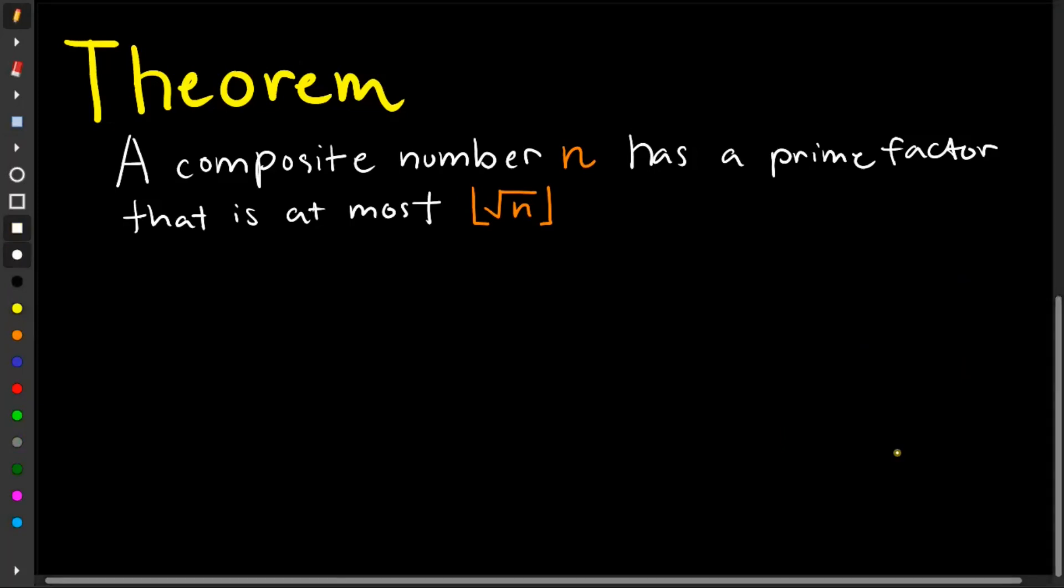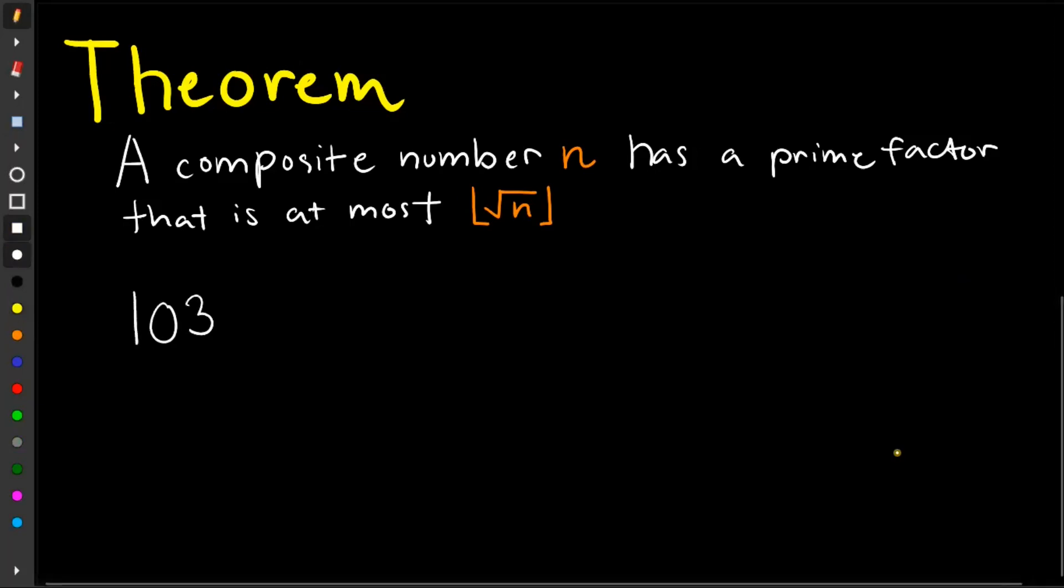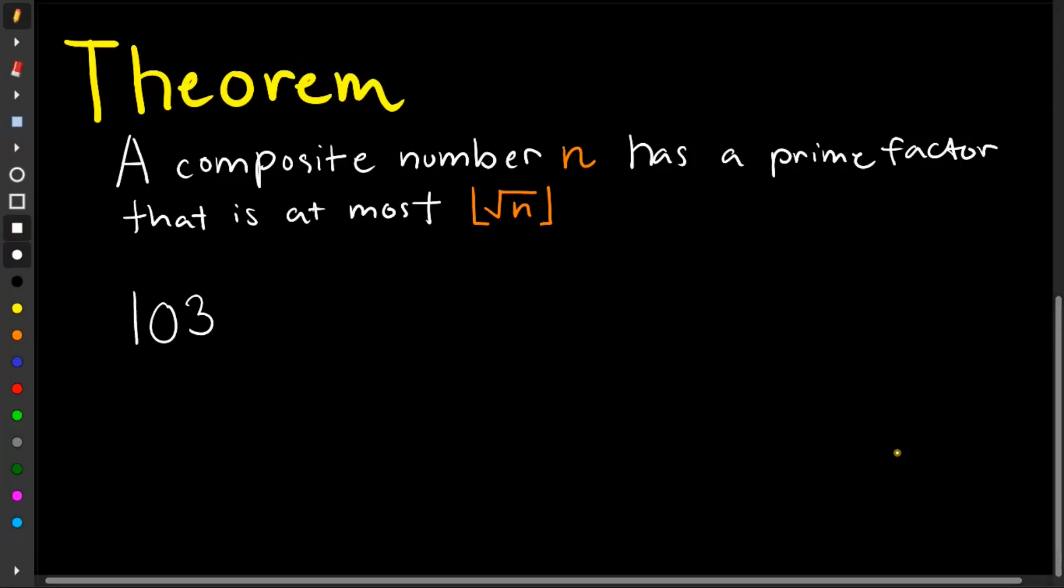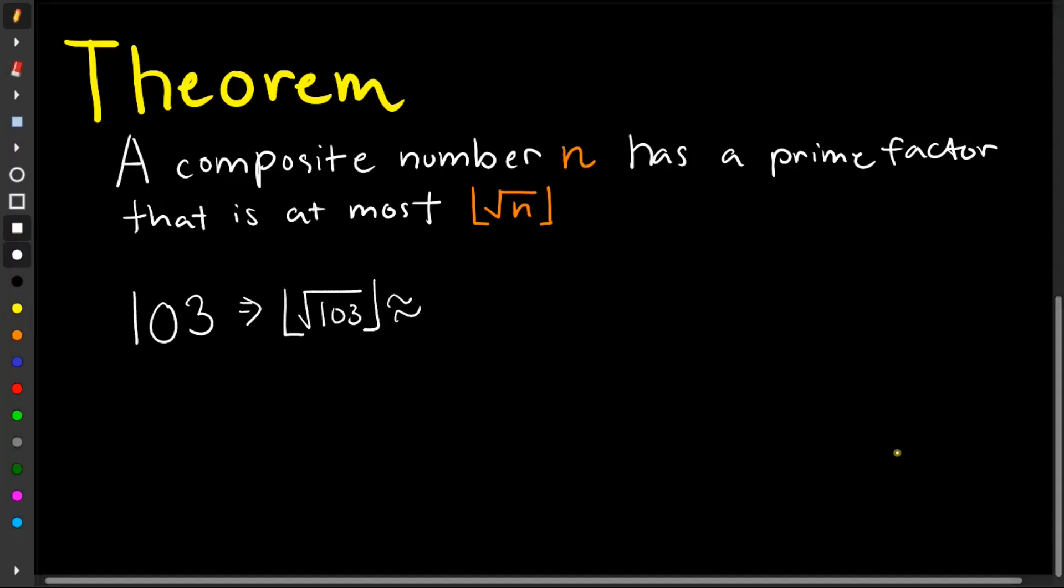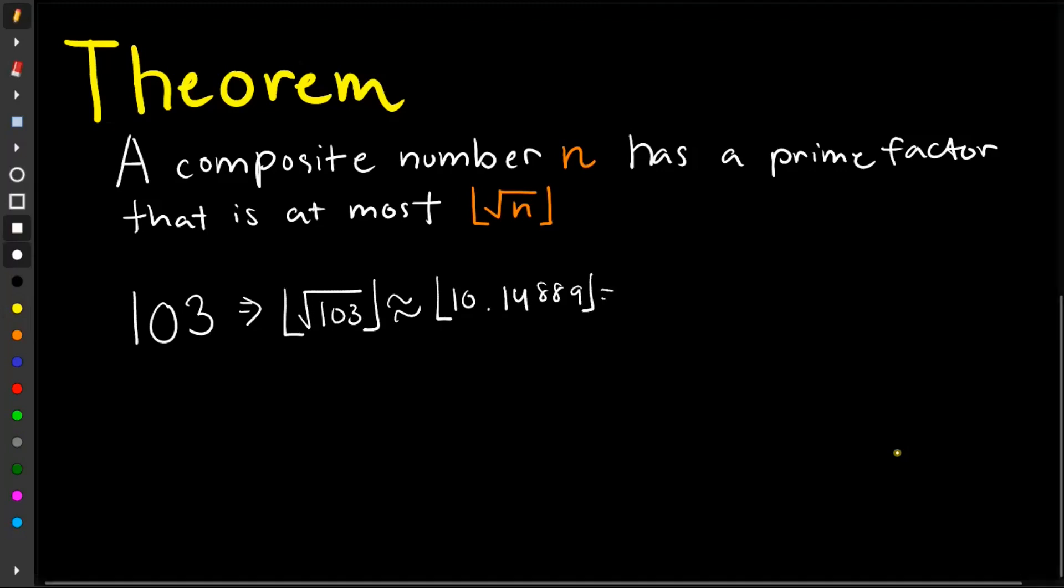Let's go to our third example. So let's try to check if 103 is prime or composite. So applying our theorem again,